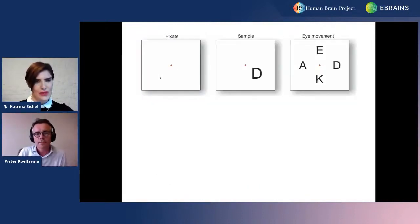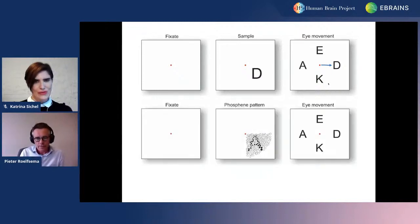Another important question is, what happens if we stimulate a pattern of electrodes at the same time? To find out if the monkey then perceives a pattern, we trained the animals to report 16 letters of the alphabet. If the animal saw a letter D, we expect him to make an eye movement to the letter D in the choice menu. Now the critical experiment is we're not going to present this visual stimulus anymore, but we're going to stimulate a pattern of electrodes, aiming to recreate a letter by directly interfacing with the brain, hoping that the animal will report the corresponding letter.